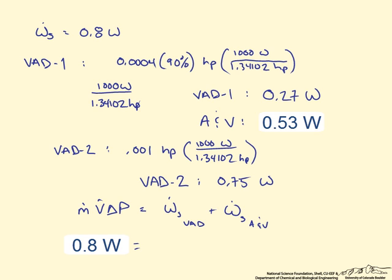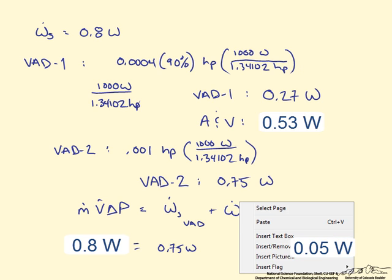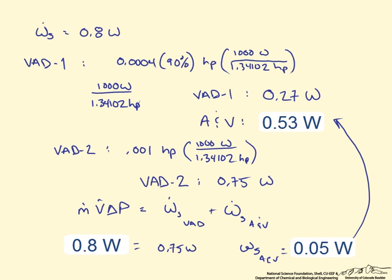So if VAD-2 adds more energy, then the shaft work that the atrium and ventricle have to do ends up being only 0.05 watts. When we compare this to VAD-1, it is pretty clear that VAD-2 wins.